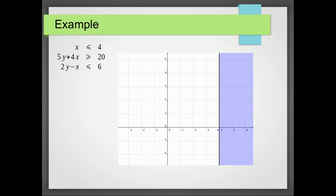I'm now going to draw the line 5y plus 4x is equal to 20. I'm going to pick a point. And I can pick 0, 0 again, so I might as well. 5 times 0 plus 4 times 0 is 0. Is 0 greater than 20? No, it's not. So below the line is false. So I'm going to shade below the line.